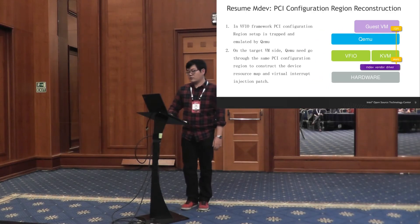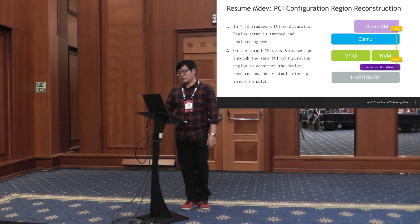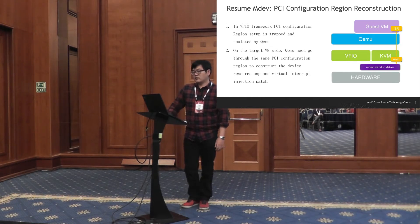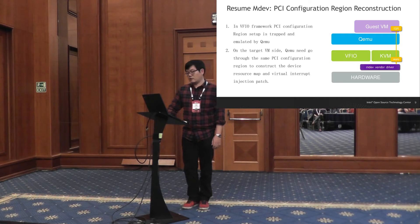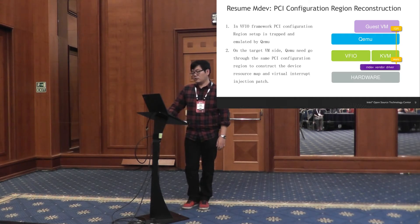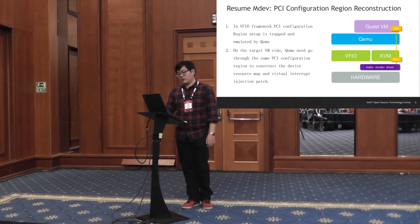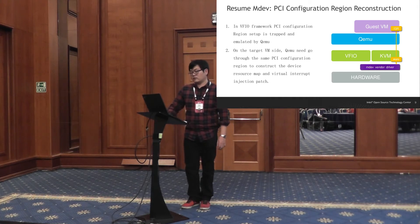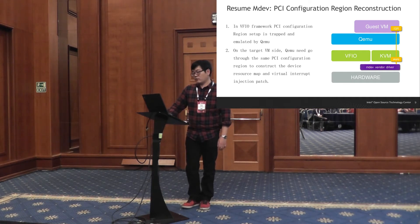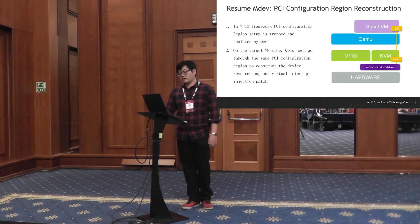As part of the device running process, one important thing is to reconstruct the PCI configuration region. On the source VM side, this config region is initialized by the guest itself during boot up. But on the target VM side, QEMU will have to go through the same PCI configuration region to reconstruct the Mediated device resource mapping and rebuild the virtual interrupt injection path, so that the Mediated device driver can inject virtual interrupts into the guest through event FD after the target VM resumes.